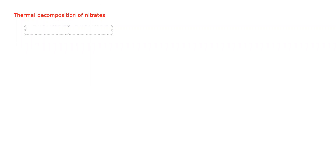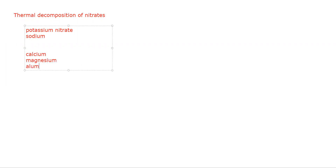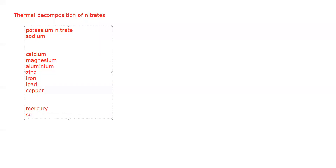We'll look at the normal decomposition of metal nitrates. You need to learn the following metals in order: potassium, sodium, calcium, magnesium, aluminium, zinc, iron, lead, copper, mercury, silver, gold, and platinum. If you have nitrates of these compounds, the decomposition products depend on the metal.